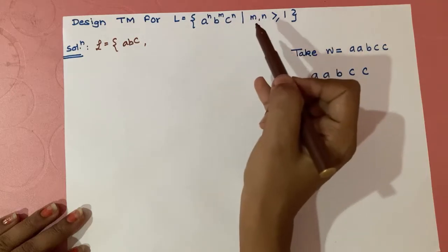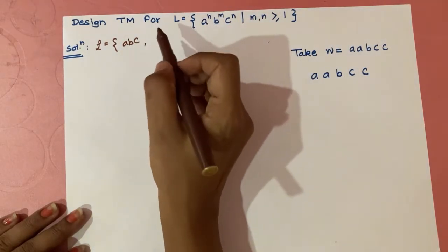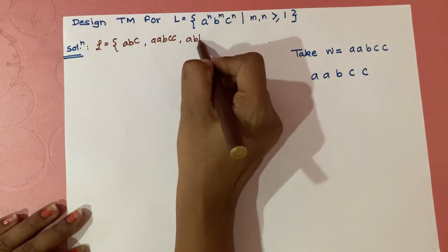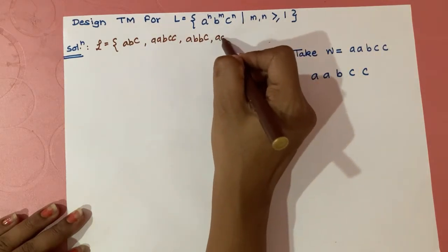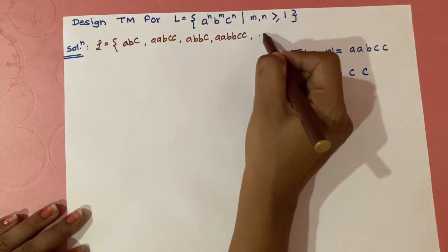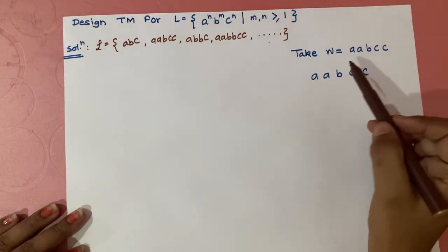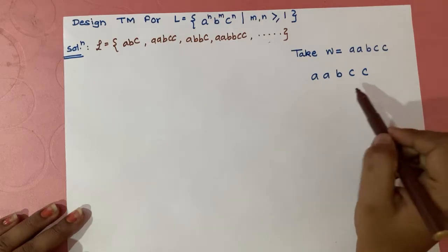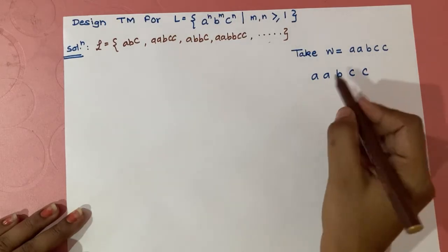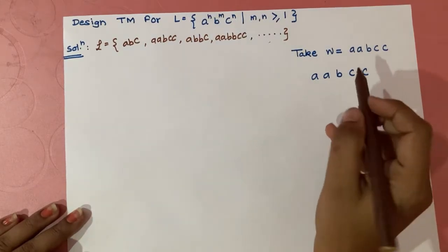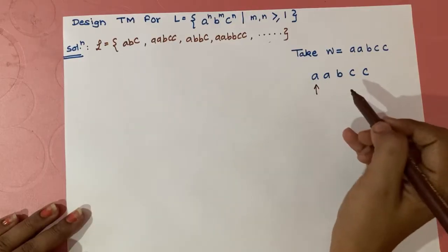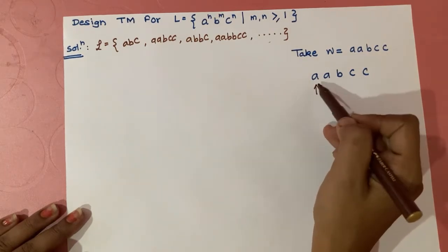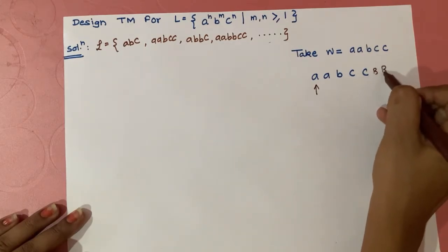The smallest string can be 'abc.' The next smallest string can be 'abcc' or 'abbc.' Next will be 'aabbcc,' and this will go on repeating. For simulation purposes, I have considered the string w = 'aabcc' — double-a, b, double-c. Our read/write header starts at the leftmost position of the string, and we consider blank symbols present before and after the string.